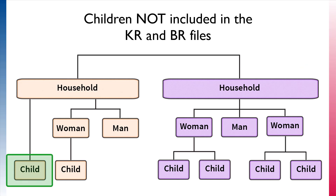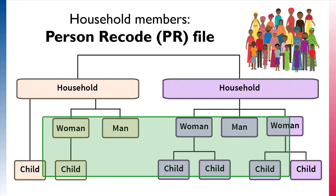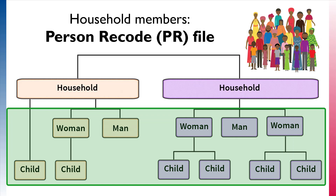It is worth noting that not all children in a household will be included in the KR and BR files. For example, if there is a child in the household of a non-interviewed mother, they are not included in the KR and BR files. However, this child's basic information would be included in the Persons Recode, or PR file. In the Persons Recode, the unit of analysis is all usual household members and those who stayed in the household the night before the survey. This includes people of all ages who are identified in the household questionnaire, including those children whose mothers were not interviewed. This file also contains biomarker information collected as part of the survey.